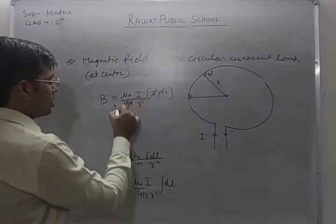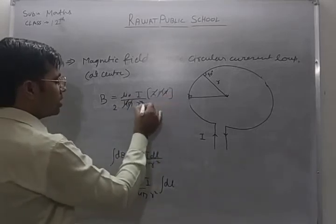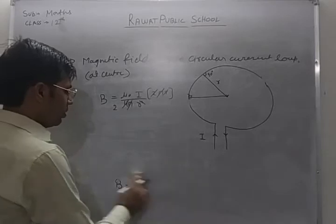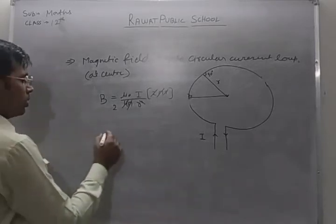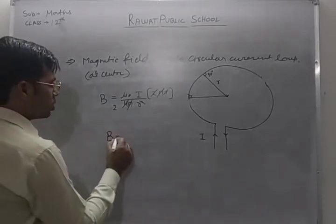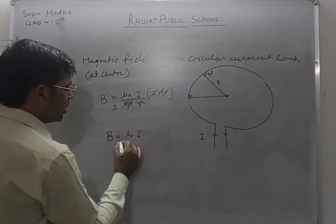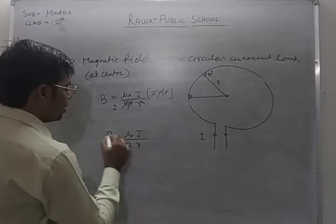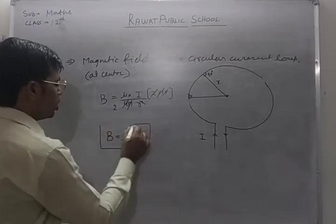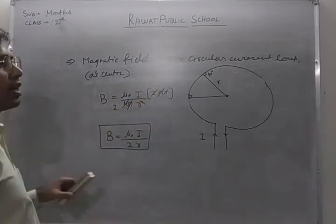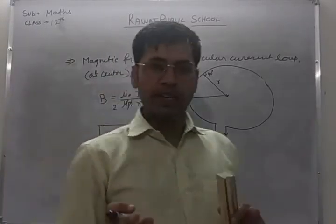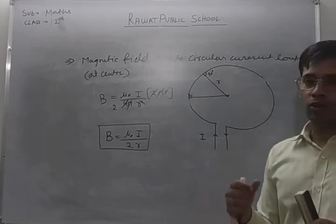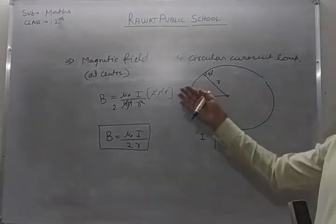Simplifying: π in the numerator cancels with π in the denominator, and one factor of R cancels as well, leaving: B = μ₀I / 2R. This is the magnetic field due to a circular current loop at its center. The direction of the magnetic field can be determined using the right-hand thumb rule.